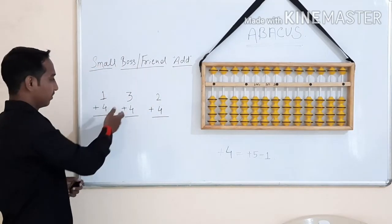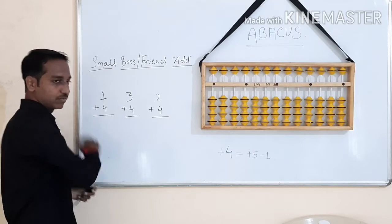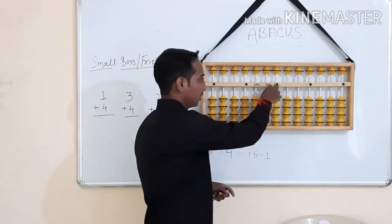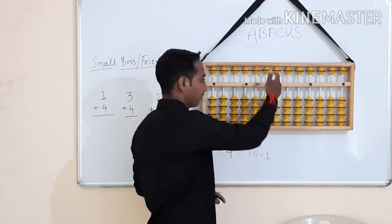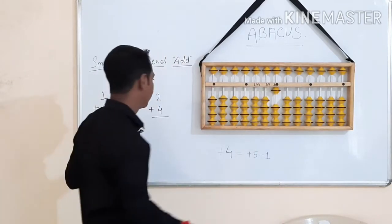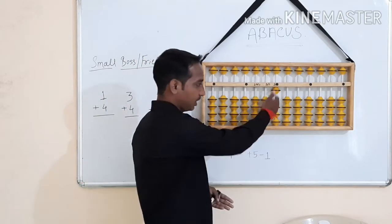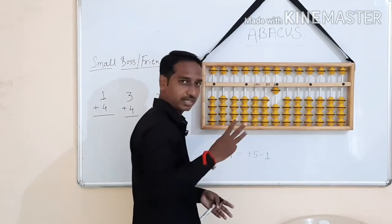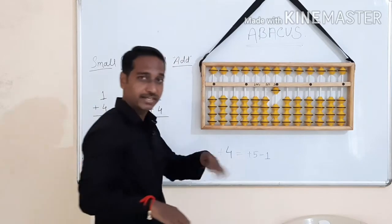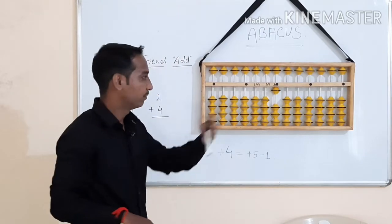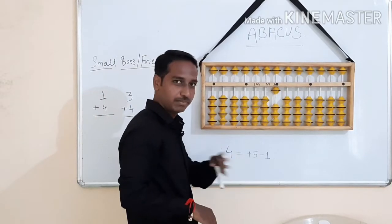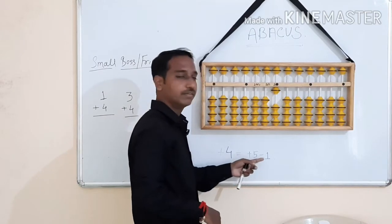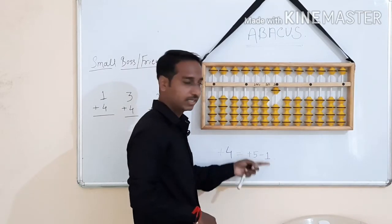The first example is 1 plus 4. 1 is the unit. 1 plus 4 — if you want to add bits, you can add 3 bits, you can add 4. Add 4, Add Boss 5, Less Friend 1.